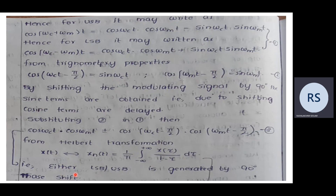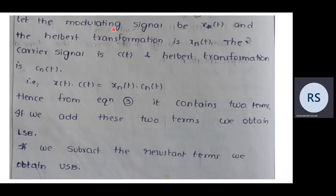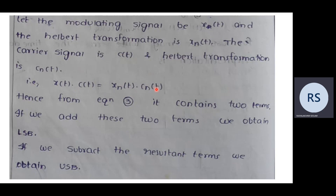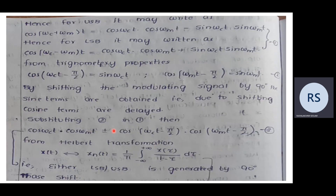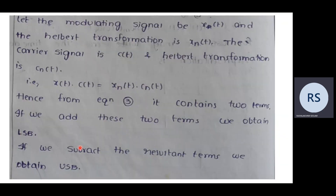Let the modulating signal be x(t) with Hilbert transform x̂(t), and the carrier signal be c(t) with Hilbert transform ĉ(t). The Hilbert transform of x(t)·c(t) equals x̂(t)·ĉ(t). From the combined equation: if we add the two terms we obtain the lower sideband; if we subtract the two terms we obtain the upper sideband. Adding yields LSB; subtracting yields USB.